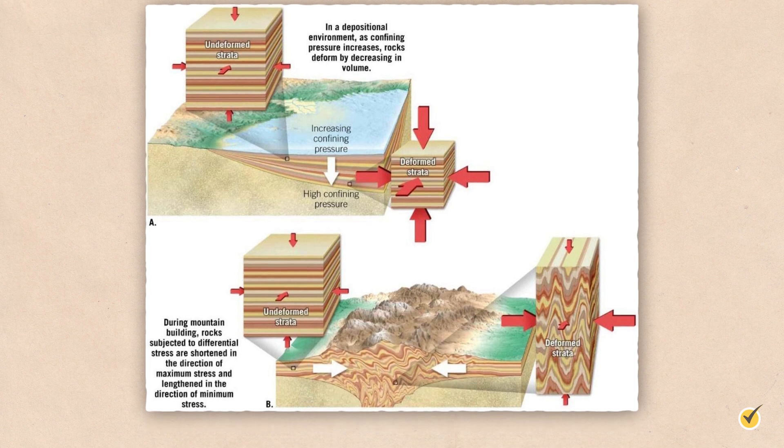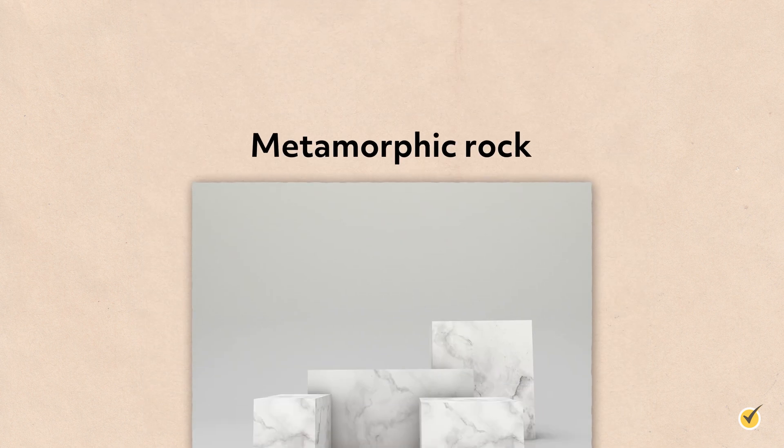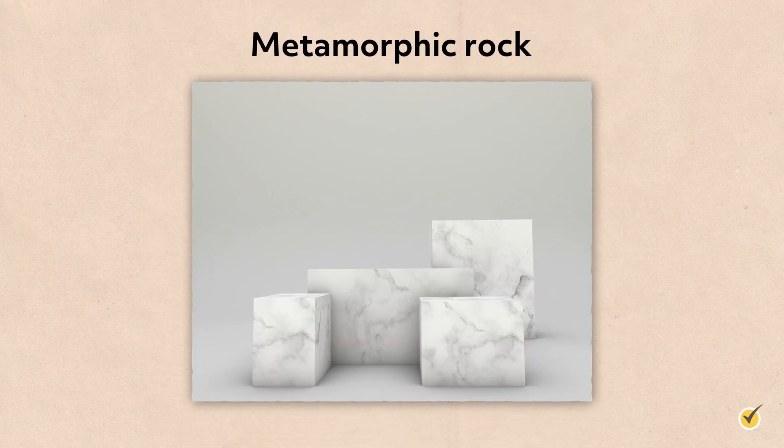One example of metamorphic rock is marble. Marble's parent rock is the chemical sedimentary rock limestone, which turns into marble after being buried and subjected to increased temperature and pressure.